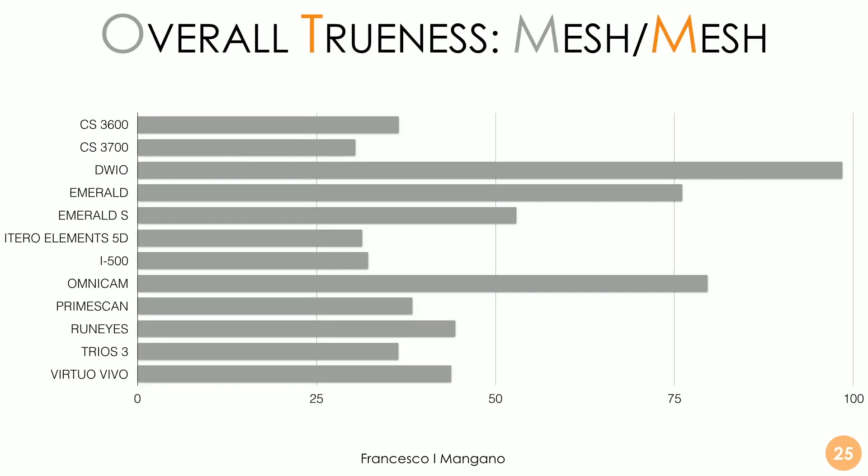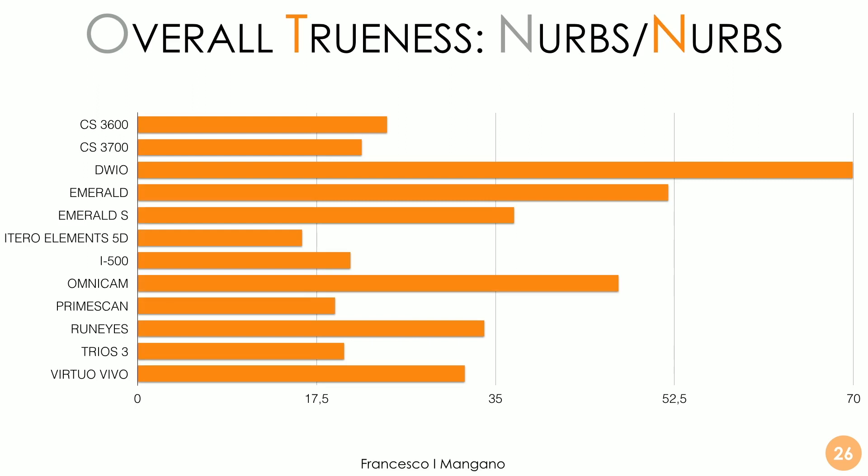For the mesh-to-mesh evaluation, the best results were obtained by the CS3700. For the NURBS-to-NURBS evaluation, the best results were obtained by the iTero Elements 5D — very interestingly, with less than 17.5 microns of deviation on the full arch. We are talking about very little error compared to what could be achieved even five years ago — trueness is clearly much better now. The values discussed here refer to absolute deviation. There are also other methods to evaluate overall trueness, such as root mean square or the 90th minus 10th percentile divided by two — more recently introduced methods not used in this study.